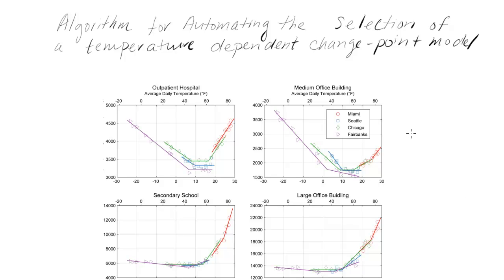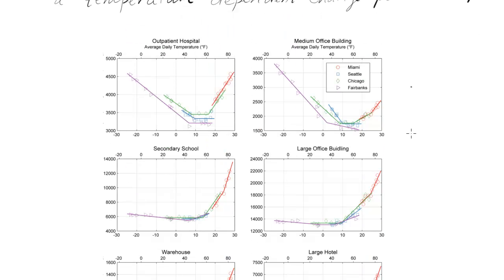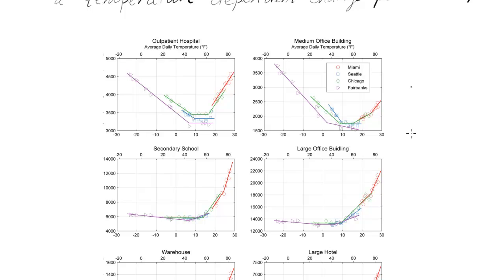So I have a copy of that plot here. What you'll see here is we have six plots, and therefore six different building sector types. And those sector types are outpatient hospital, medium office building, secondary school, large office building, warehouse, and large hotel.